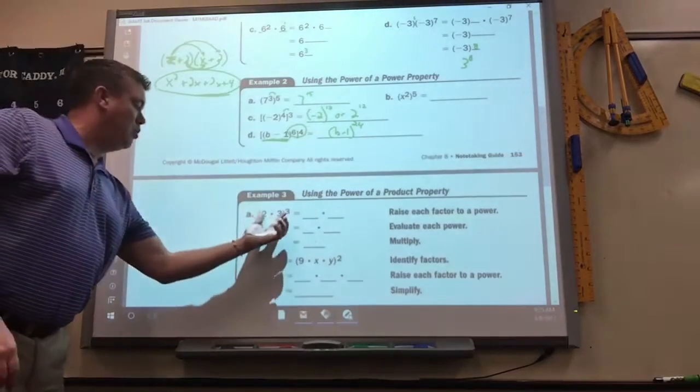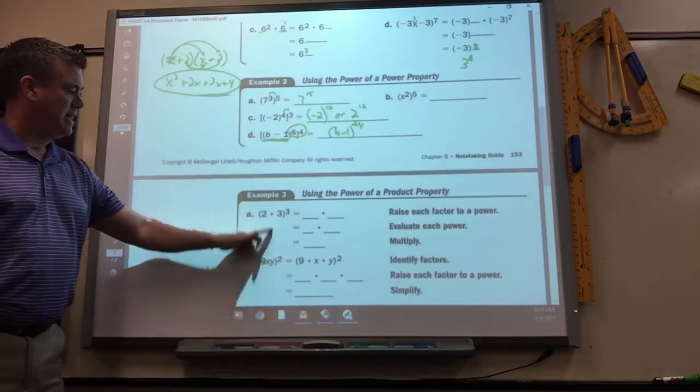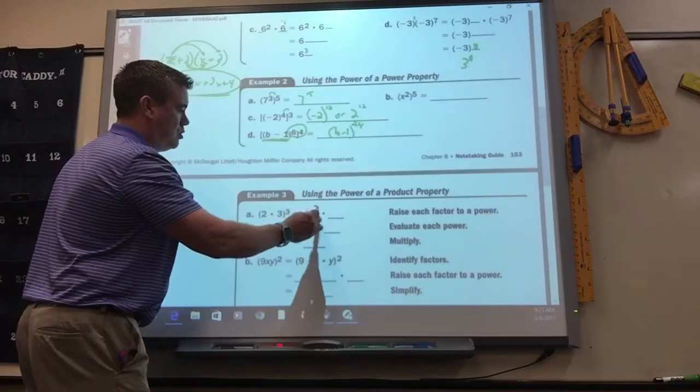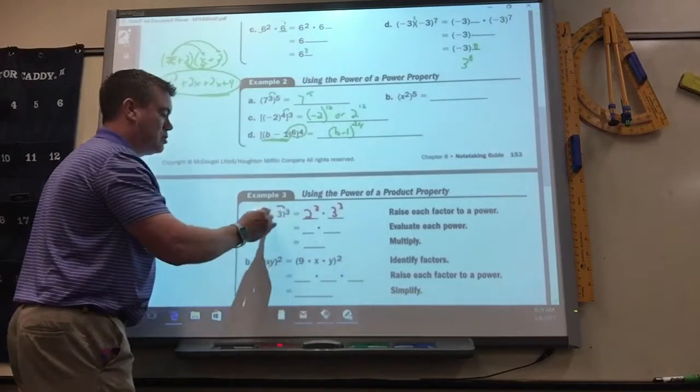Okay, so you only do it if they're multiplied together. If everything's together, then you do it to each one. This would be 2 cubed, 3 cubed. You just do it to each one.